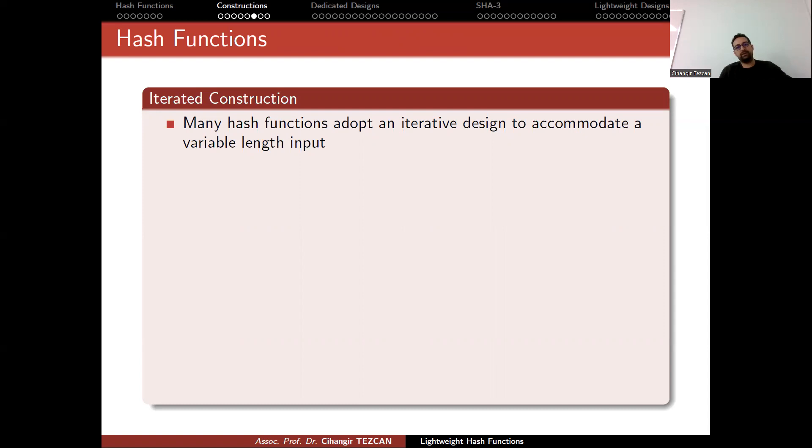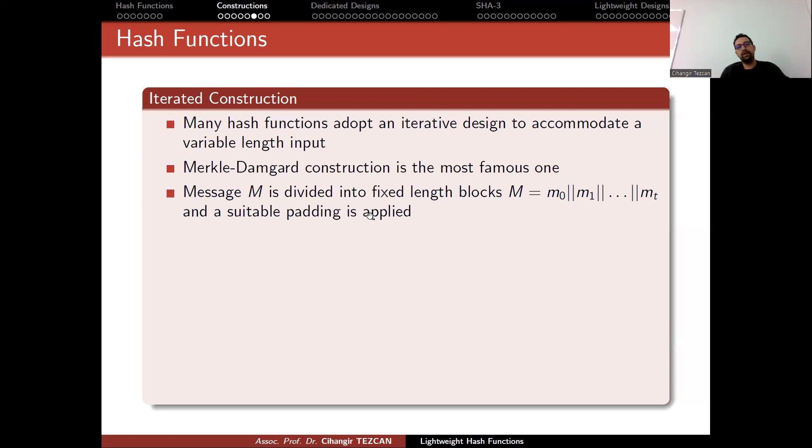In this case, we have to construct with iterated construction. Many hash functions adopt an iterative design to accommodate a variable length input. So a Merkle-Damgard construction is the most famous one. Message M is divided into fixed length blocks, where M is divided into, in this scenario, T blocks, T plus one blocks. And you apply a suitable padding to the end.